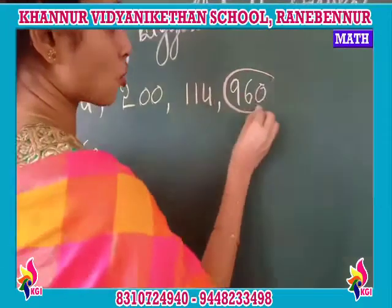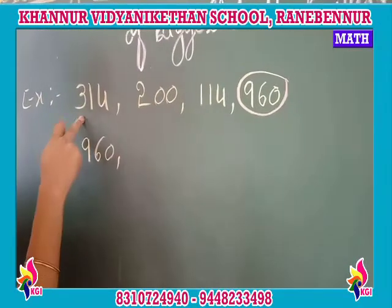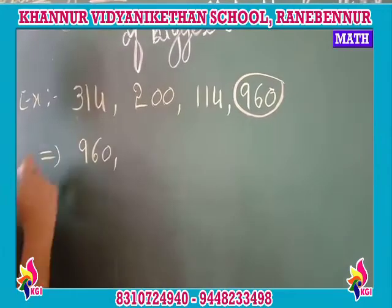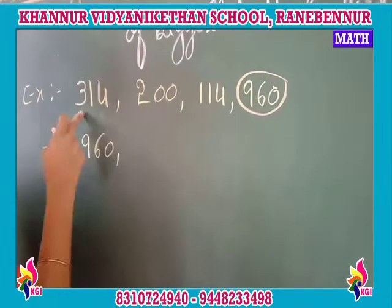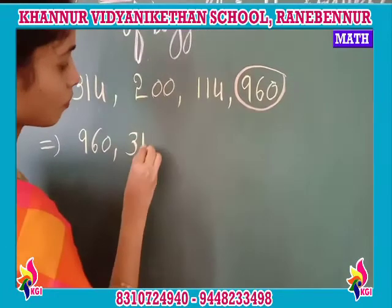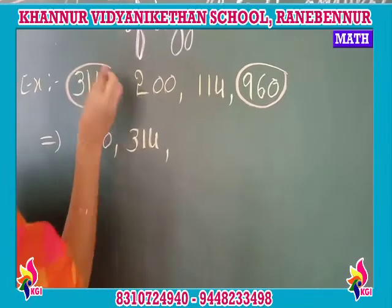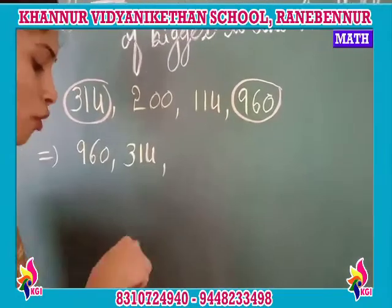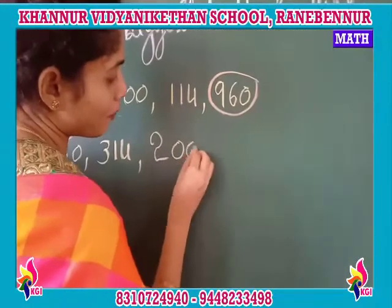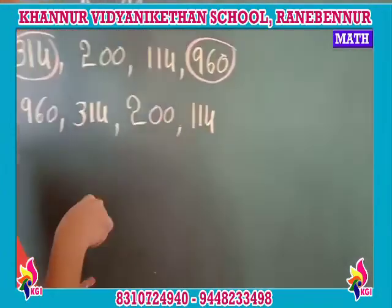After 960, which number will come? Comparing the remaining three numbers — hundreds digits are 3, 2, 1. So 340 comes next. After 340, comparing 200 and 114: 200 is the bigger one. Last one is 114.